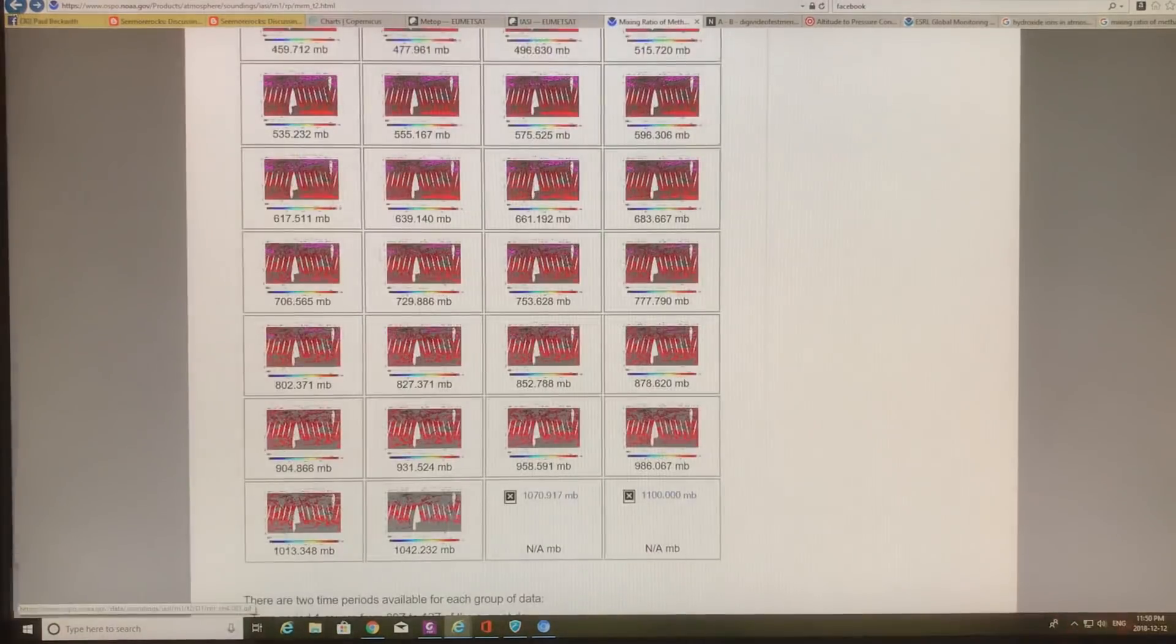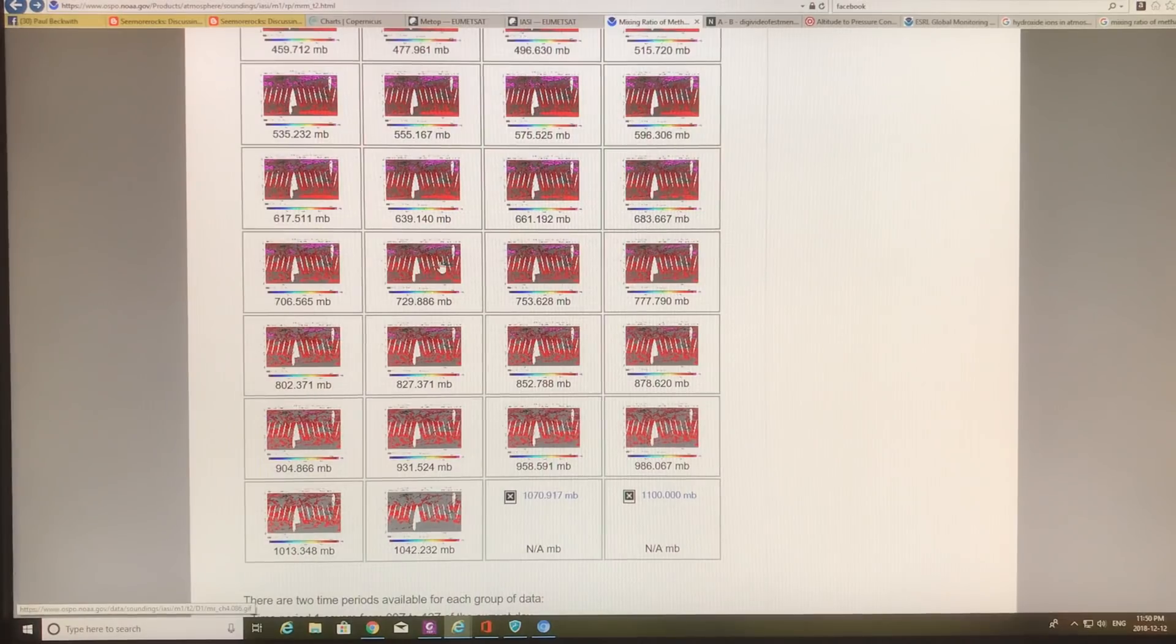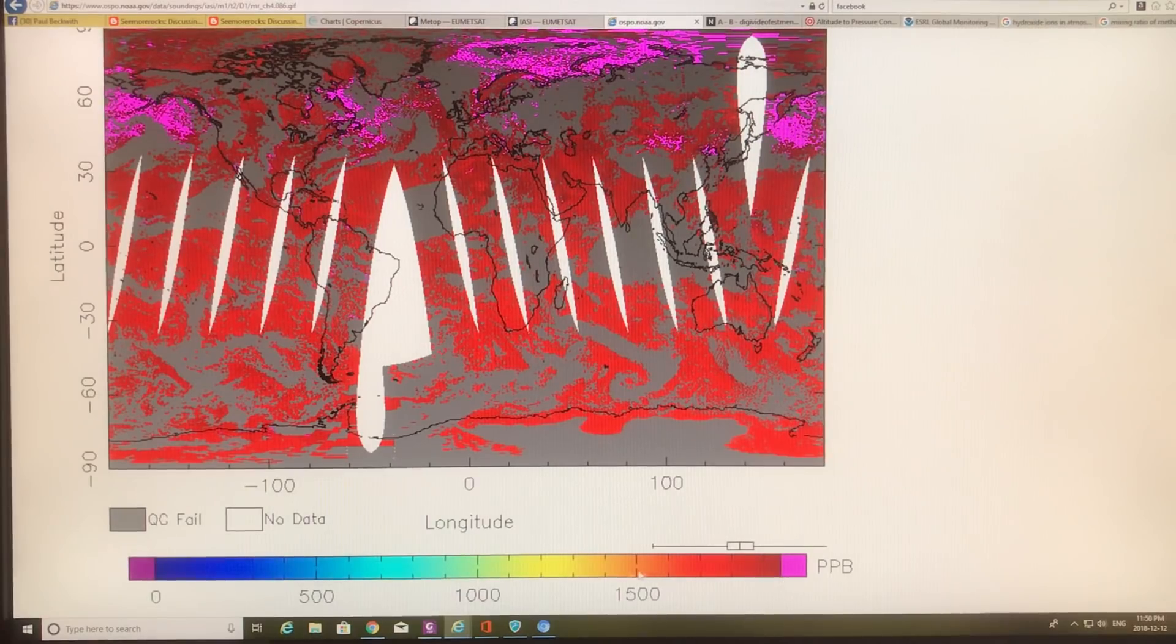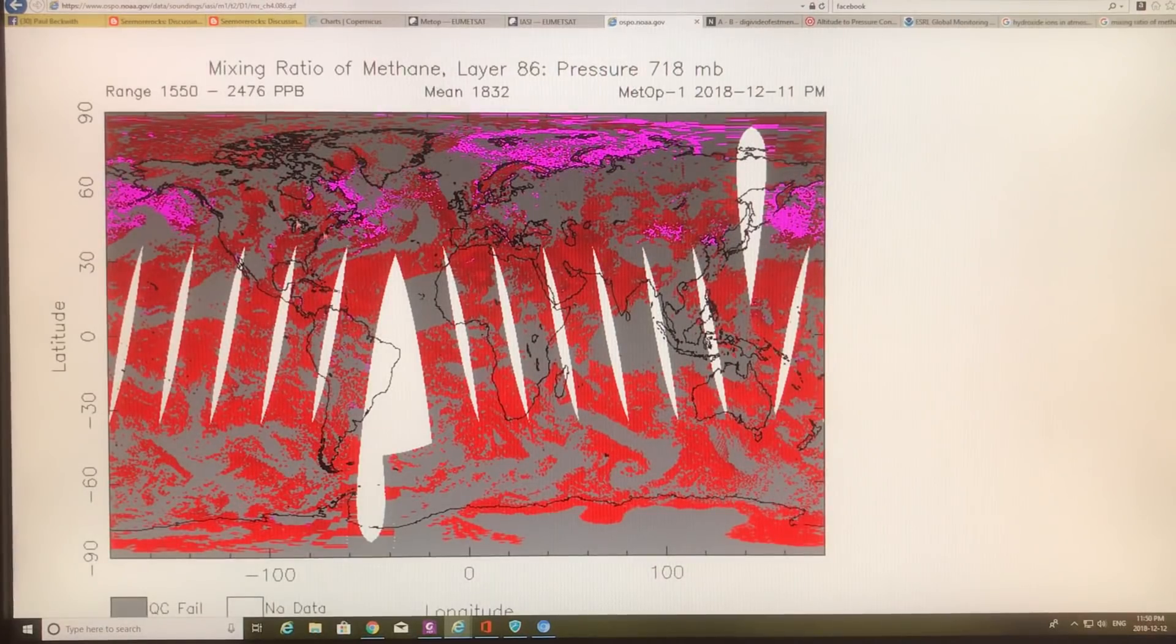So let's go back a bit, and what you can see is that as you go up higher and higher, you start getting higher levels up in the poles. The mean is 1830, this is the range, and you start the color code. You can see that there's more of a distribution with latitude as you go up to higher and higher altitudes. 718 millibar, that's about three kilometers or so high.